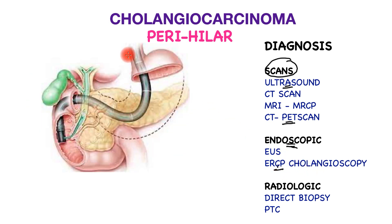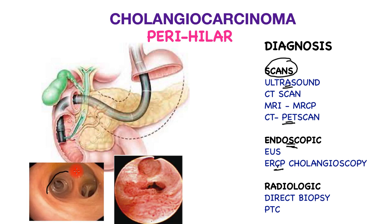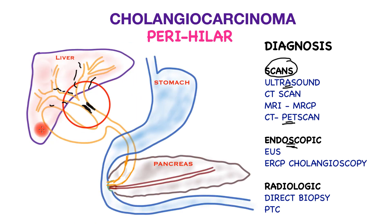ERCP — endoscopic retrograde cholangiopancreatography — involves a flexible tube through the stomach that parks at the exit point of the bile tube, then inserts a camera up the bile tube for a direct view and to take biopsies. A cholangioscope can visualize the bile tube with its two divisions clearly. It is important to note that a biopsy is not always essential for treatment, as detecting cancer cells can be very elusive.